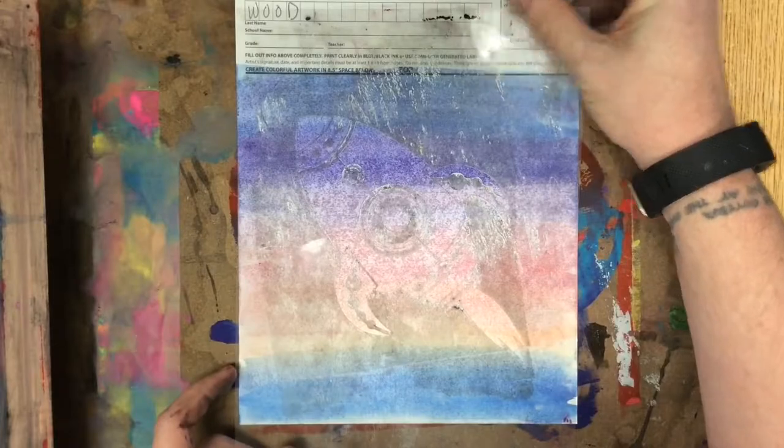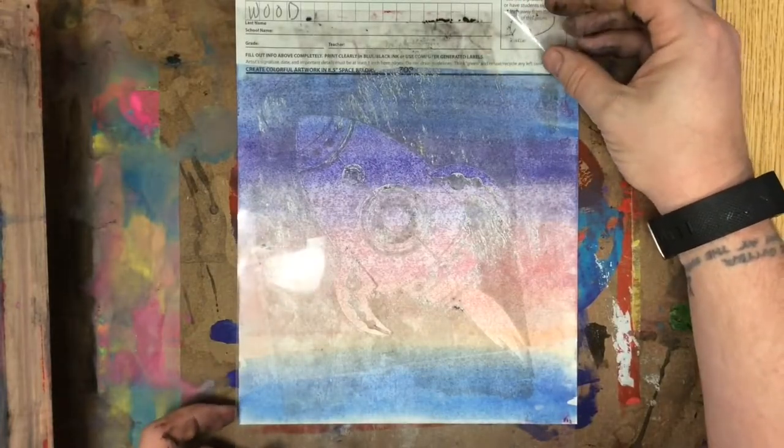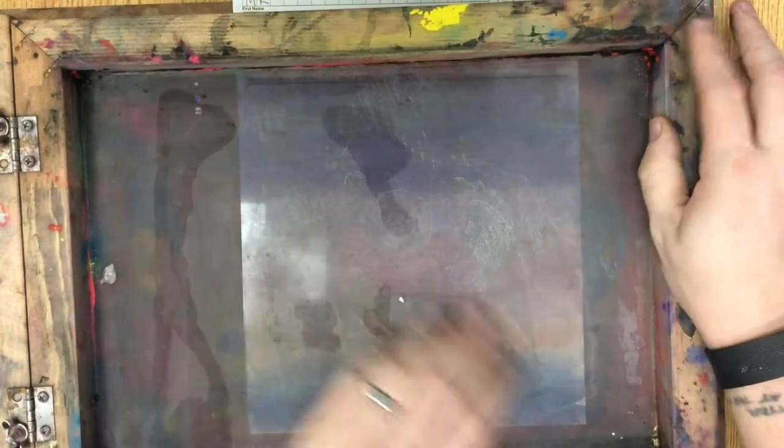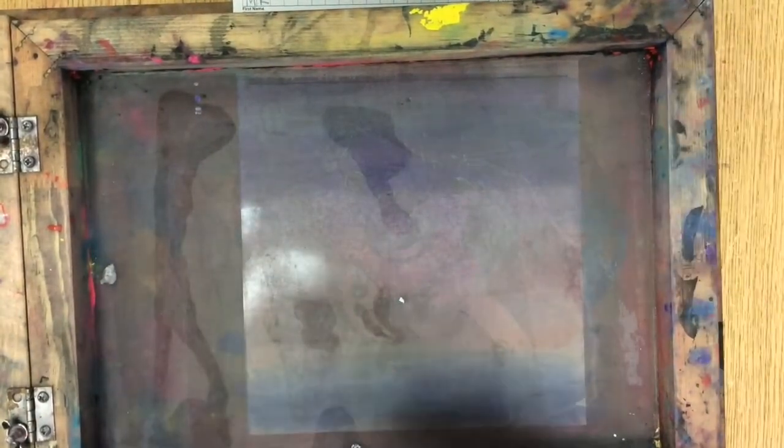I am going to line it up where I want my rocket ship to go. I am going to put the screen on top of that. The screen is going to hold my stencil in place.